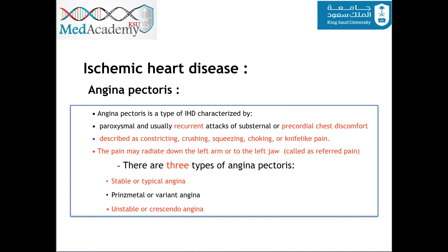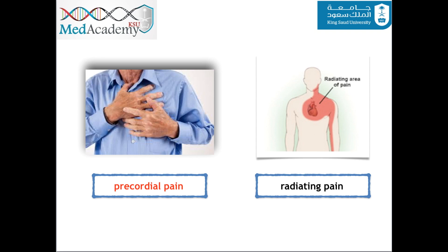There are three types of angina pectoris: stable angina, Prinzmetal's angina, and unstable angina. As we can see in this picture, this is the pericardial pain — the patient will come to the clinic pointing at his chest. Radiating pain goes from the left side of the chest to the left jaw or the left arm.